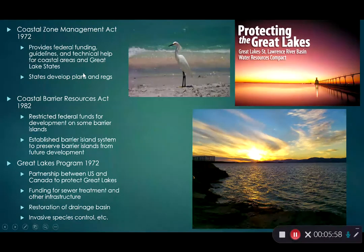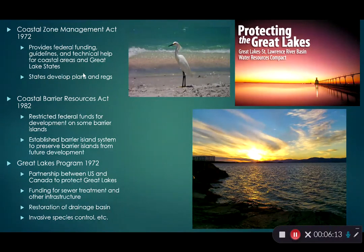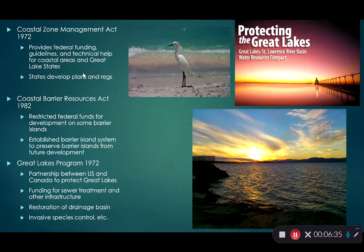Funding and resources are channeled through the states, so specific policies are developed and implemented at the state and local level with federal assistance. The Coastal Barrier Resources Act of 1982 limited federal funding for development on barrier islands, recognizing their value in protecting coastal environments from storms. Restricting federal funds was seen as a way to preserve those lands from future development.